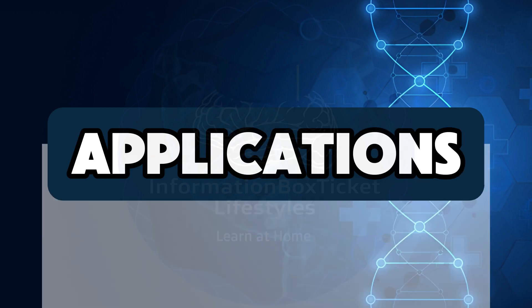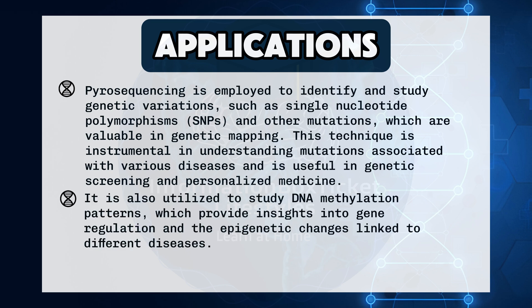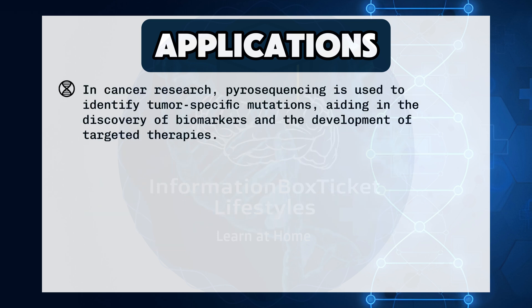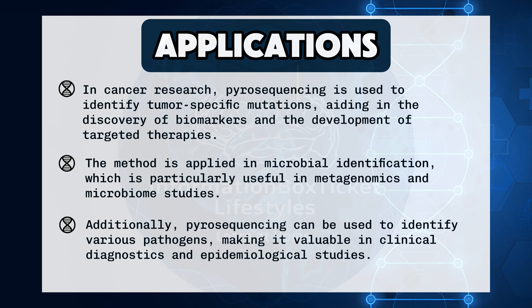Pyrosequencing is employed to identify and study genetic variations such as single nucleotide polymorphisms (SNPs) and other mutations, valuable in genetic mapping. This technique is instrumental in understanding mutations associated with various diseases and is useful in genetic screening and personalized medicine. It is also utilized to study DNA methylation patterns, providing insights into gene regulation and epigenetic changes linked to different diseases. In cancer research, pyrosequencing is used to identify tumor-specific mutations, aiding in biomarker discovery and targeted therapy development. The method is applied in microbial identification, particularly useful in metagenomics and microbiome studies, and can identify various pathogens, making it valuable in clinical diagnostics and epidemiological studies.